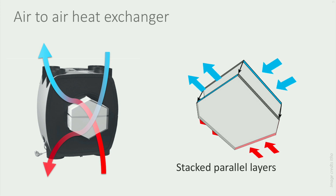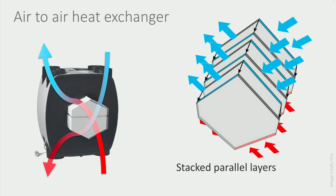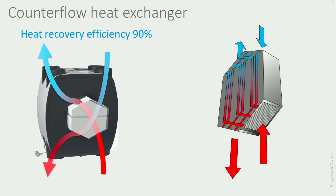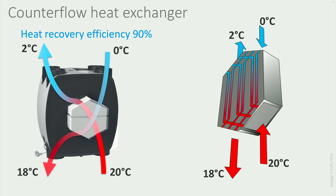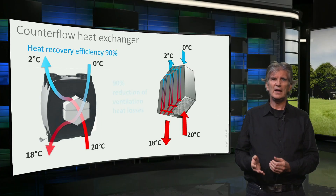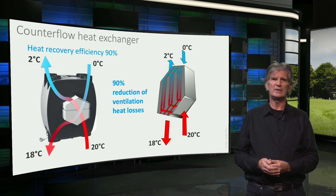The heat exchanger consists of parallel aluminum plates, creating dozens of small parallel air ducts, alternately for the incoming and outgoing air flow. The total heat exchange surface between the incoming and outgoing air flows is several square meters. This heat recovery unit with a counter flow heat exchanger has a heat exchange efficiency of more than 90 percent. So for example, when the outdoor temperature is 0 degrees and the indoor temperature 20 degrees, the heat exchanger will preheat the indoor air to 18 degrees and the exhaust air will be cooled down to 2 degrees. As a result, the ventilation heat losses will also be decreased by 90 percent.